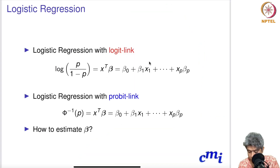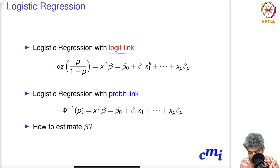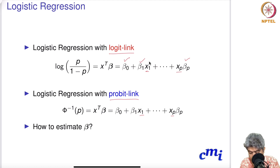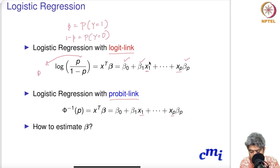Welcome back to part B of lecture 11. We continue on logistic regression. There are two variants of the logistic regression model: one is logistic regression with logit link, another is logistic regression with the probit link. If we know x1, x2, ..., xp and can estimate beta_0, beta_1, ..., beta_p, then we can estimate the value of p — the probability that y equals 1 or 1 minus p, which is the probability that y equals 0.